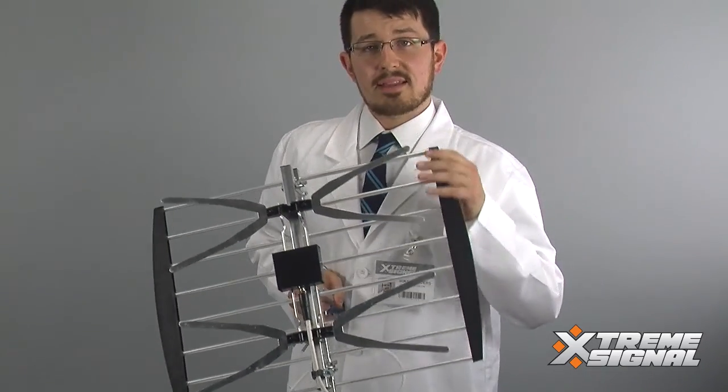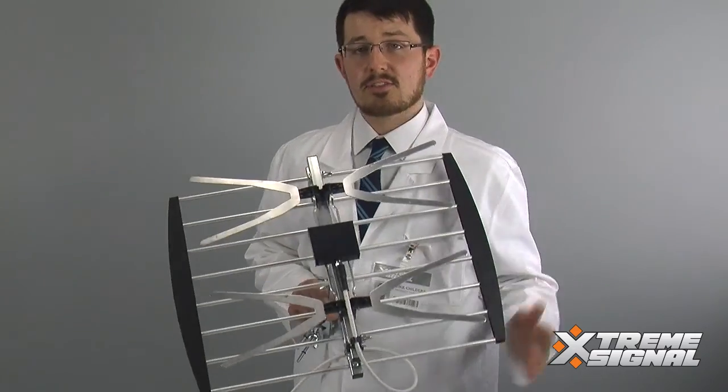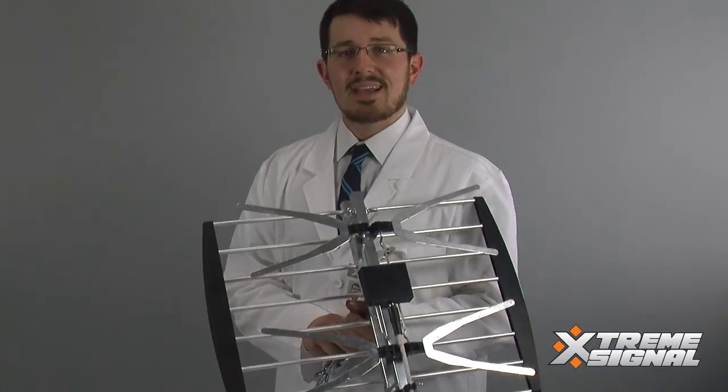The reflector is the back of the antenna, and these elements are the front of the antenna. So you're going to want to face these towards the transmitter, and you can start receiving free HDTV.